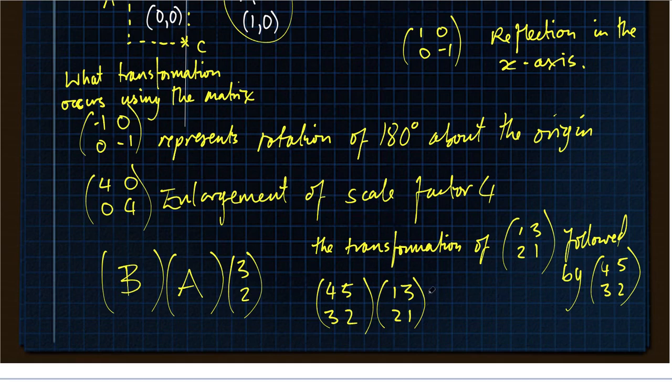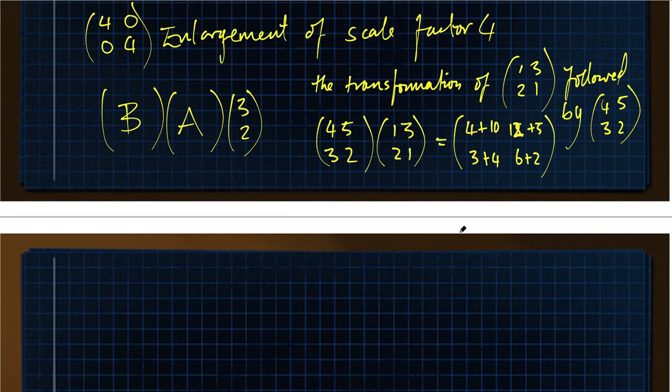So then we get 4 plus 5 times 2 is 10, and then we've got 5 times 3 is 15, 4 times 3 is 12 plus 5 times 1 is 5. It's getting very messy now. And 3 times 1 is 3, 2 times 2 is 4. And 3 times 3 is 6, 2 times 1 is 2. So the result of both of those matrix transformations is 14, 17, 7, 8. That's the answer for that.